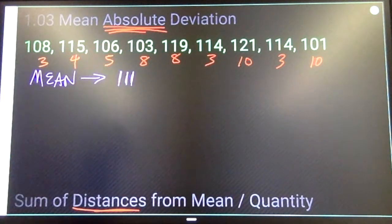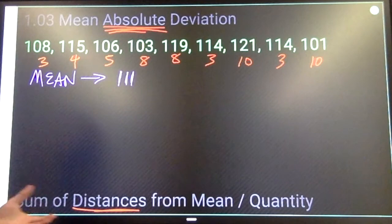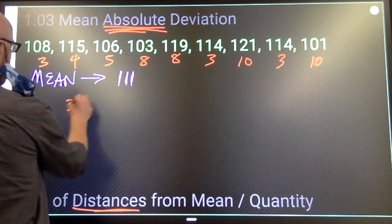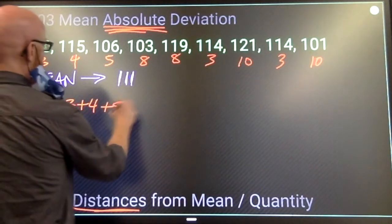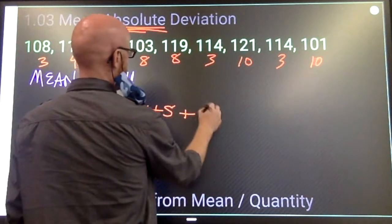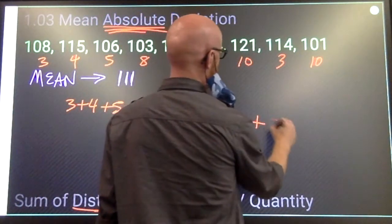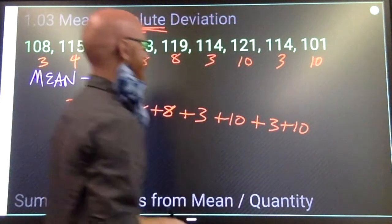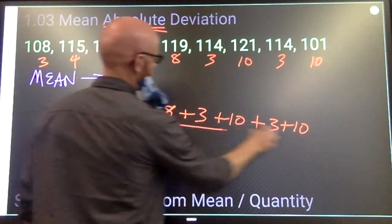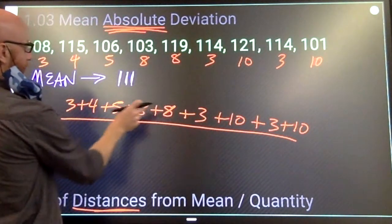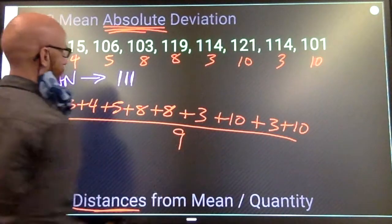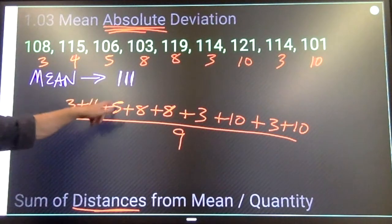What I'm gonna do with these numbers now, these distances, is find the mean of them. So I'm adding positive 3 plus 4 plus 5 plus 8 plus 8 plus 3 plus 10 plus 3 plus 10, and I'm going to divide that by 9. 7, 12, 20, 28, 31, 41, 44, 54.